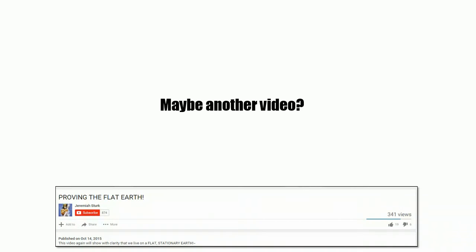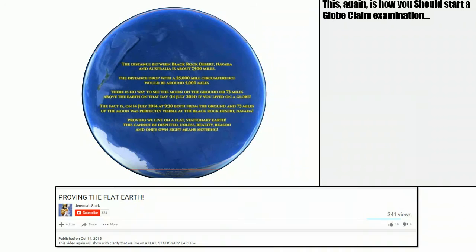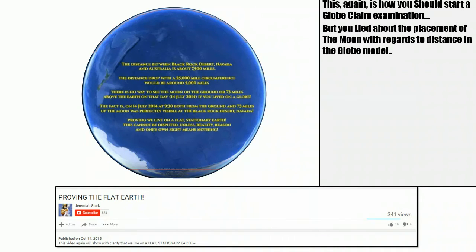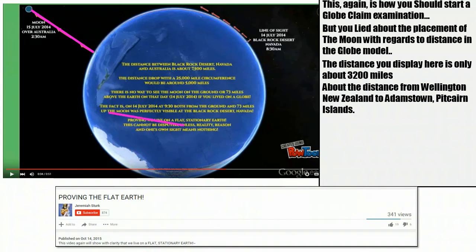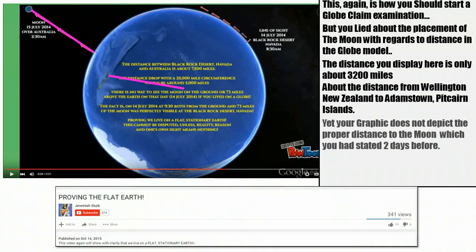But maybe Jeremiah will get this right on another video two days later. Again, this is how you should start it, because you got a picture of at least Google Earth. But then again, you lied about the placement of the moon with regards to the distance for the globe model. The distance you display here is about 3,200 miles, which is about the distance from Wellington, New Zealand to Adamstown in the Pitcairn Islands, somewhere out in the middle of nowhere. And yet your graphic still does not depict the proper distance which you had stated only two days before. So again, you are intentionally deceiving. You're going to call it a mistake. You're going to call me a slanderer. I'm still calling it, you're lying.